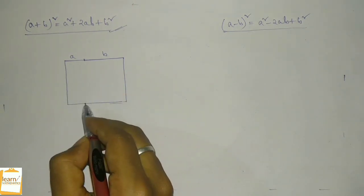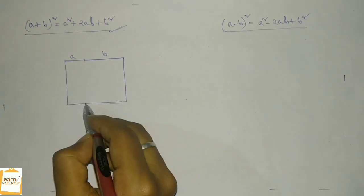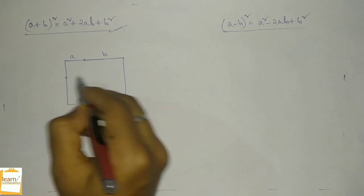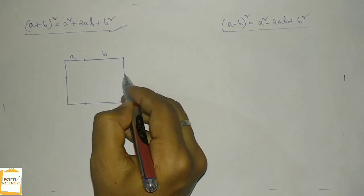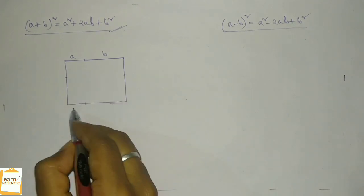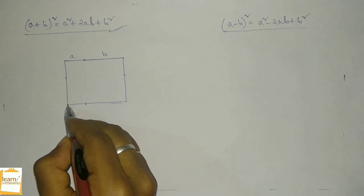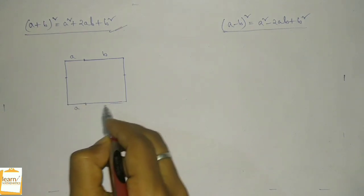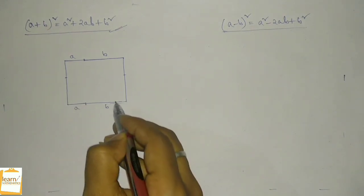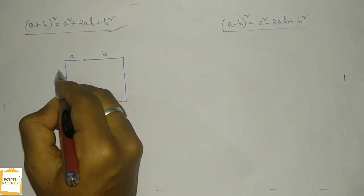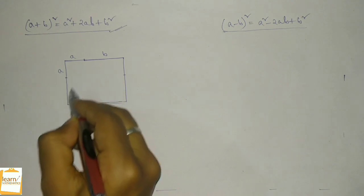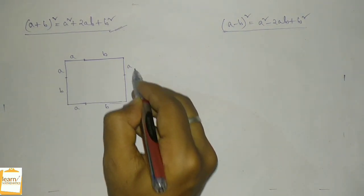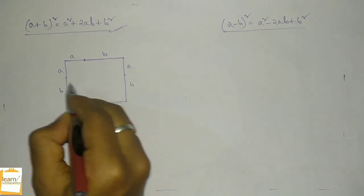Now let me take one point here, a similar point here, and here. The length of this portion is a, the length of this portion is b. This portion is a, this portion is b, a and b.